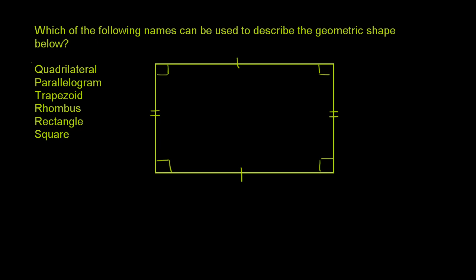Which of the following names can be used to describe the geometric shape below? The first name in question is a quadrilateral. A quadrilateral is literally any closed shape that has four sides. And this is definitely a closed shape that has four sides, so it is definitely a quadrilateral.